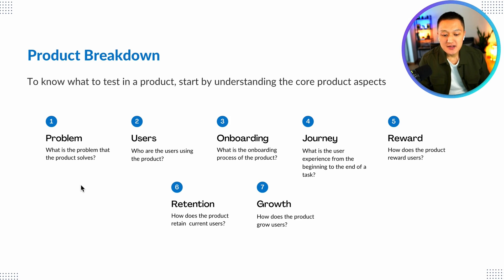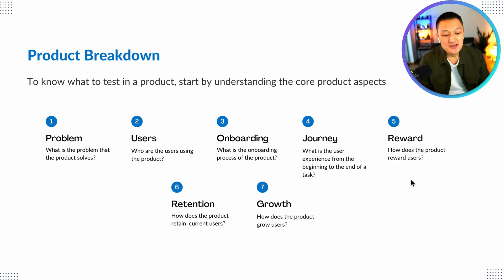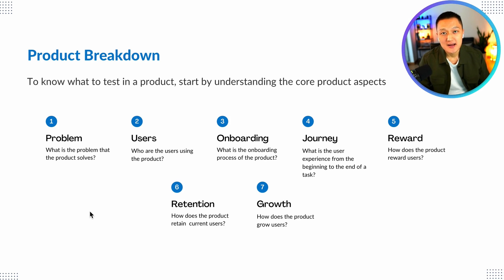There are seven things you want to ask yourself: What is the problem that the product solves? What are the types of users using the product? What is the onboarding process? What is the user journey from beginning to end of a task? How does it reward the users? How does a product retain current users? And how does the product grow users? These seven primary elements help you resolve open-ended case problems, whether in product sense, A-B testing, or applied stats and machine learning questions.